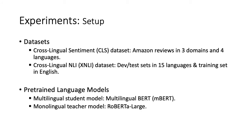In our experiments, we use two datasets. One is the cross-lingual sentiment dataset, which contains Amazon reviews in three domains and four languages. The other is the cross-lingual natural language inference dataset, called XNLI, which contains dev and test sets in 15 languages and training sets in English. For the pre-trained language models, we select multilingual BERT (mBERT) as the student model and RoBERTa-Large as the teacher model.